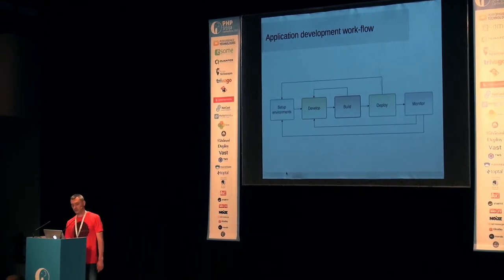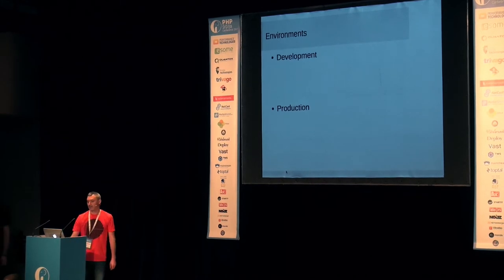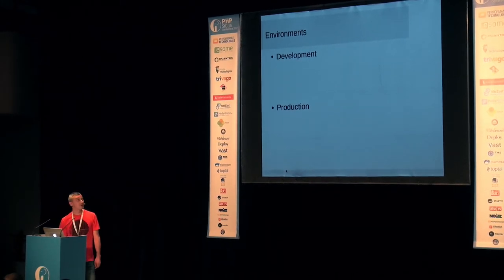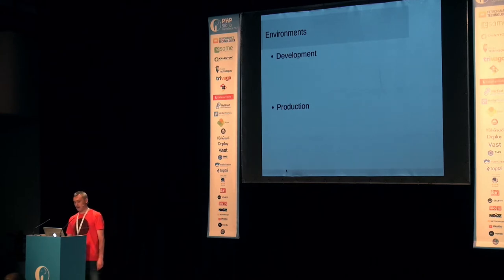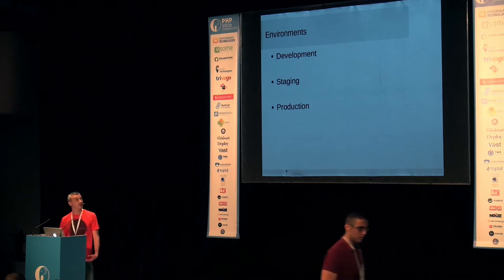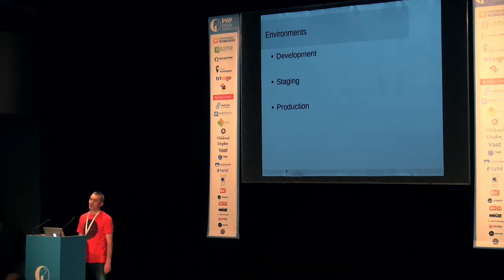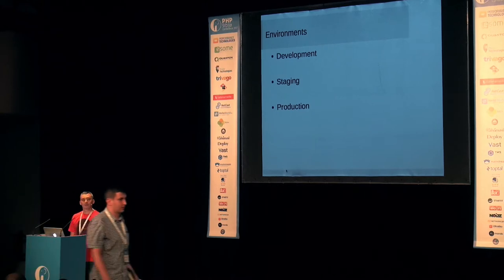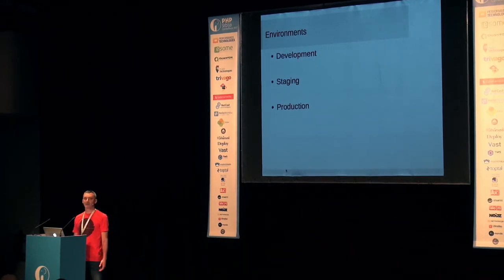So what should you do about your environment? Some minimum requirement would be to have at least a development and a production environment — unless, of course, you want to develop directly in production. But you can do better than this. You should have at least some staging environment where you would deploy your code before it hits production. That way you can easily detect failures in early stages where it is not that dangerous.